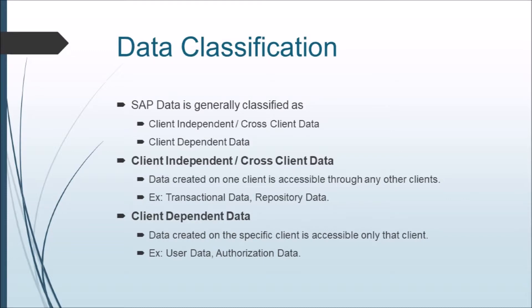SAP data is majorly classified as client dependent and client independent data. Client independent data is created on any client but can be accessed from any other client — it is not specific to any client and belongs to all clients. Examples include transaction data, dictionary data, and repository information. Client dependent data is created on a specific client and can be accessed only through that client — other clients cannot see the data. This data majorly includes user data, authorization data, etc.